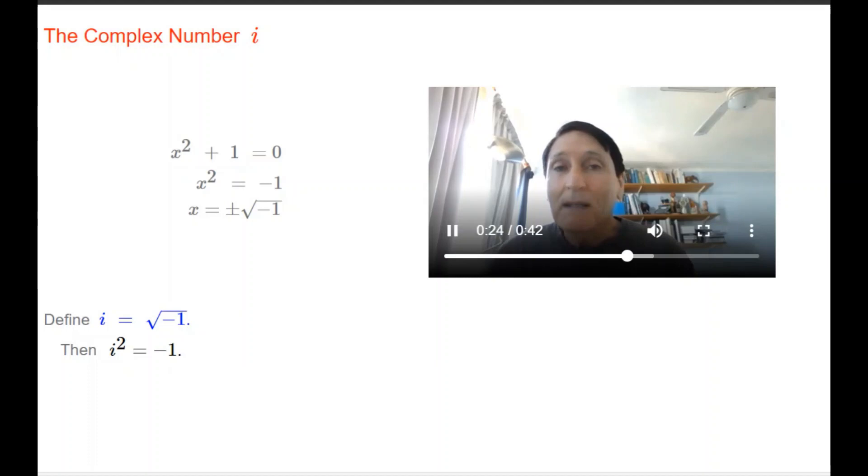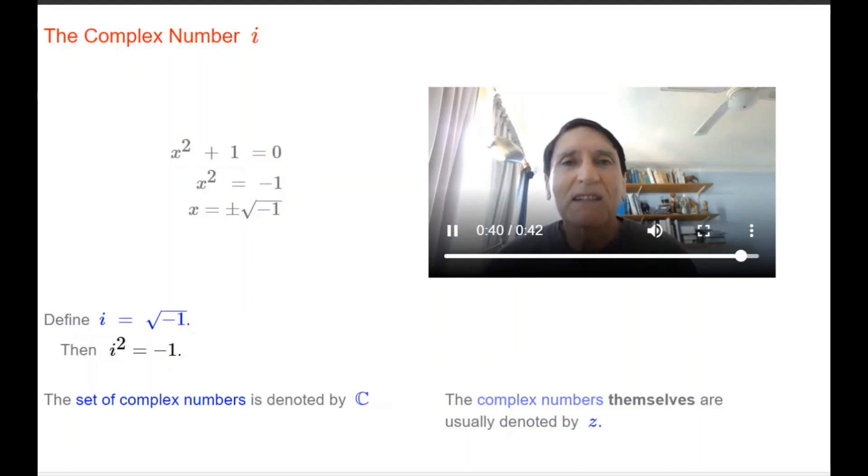Now, I know that for years you've been told that you can't take the square root of a negative number, but now we're saying you can take the square root of a negative number, and the numbers we get when we do this are called complex numbers. The set of complex numbers is denoted by the script C, and complex numbers themselves are usually represented by the letter z.